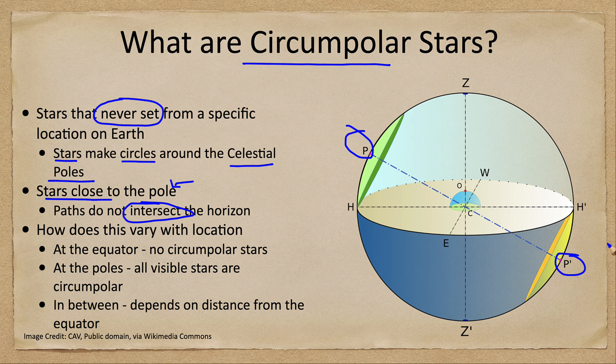The higher you are on Earth, the higher the poles will be in the sky; the lower you are, the lower they will be. There is a section shown in green representing stars that, no matter where they are in their possible positions, will always be circumpolar — always visible. Stars below the horizon in the diagram are stars that are never visible from that location. Stars very far south are not visible from far northerly latitudes, and the same is true for stars very far north, which would not be visible from southerly latitudes.